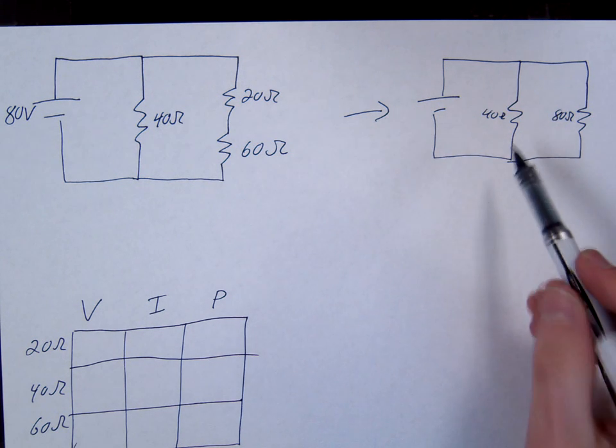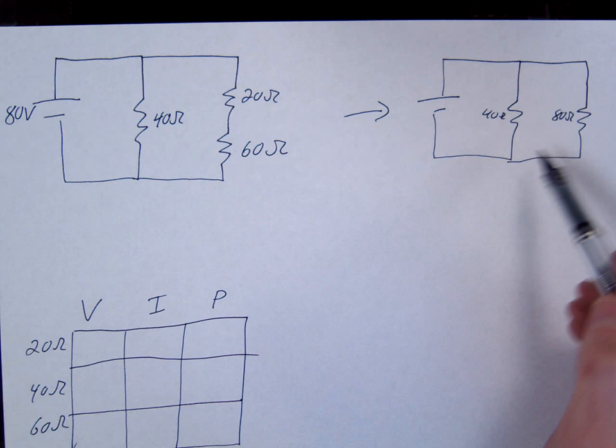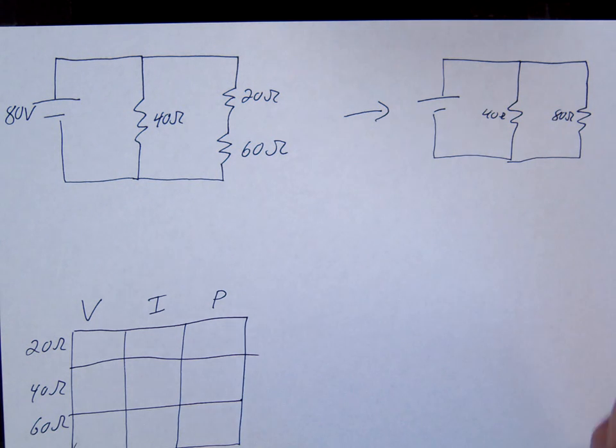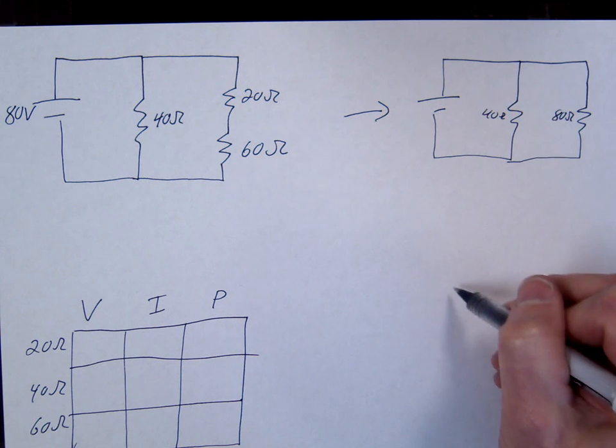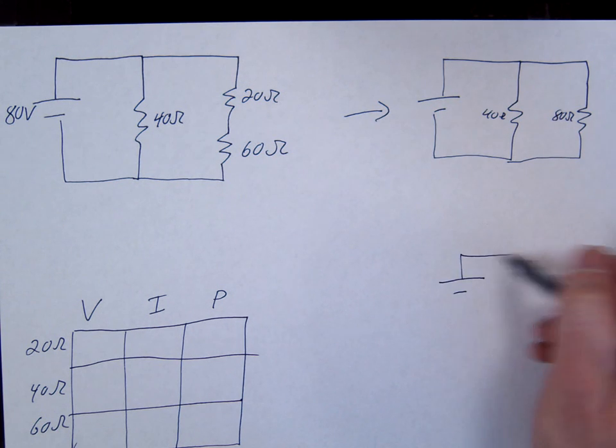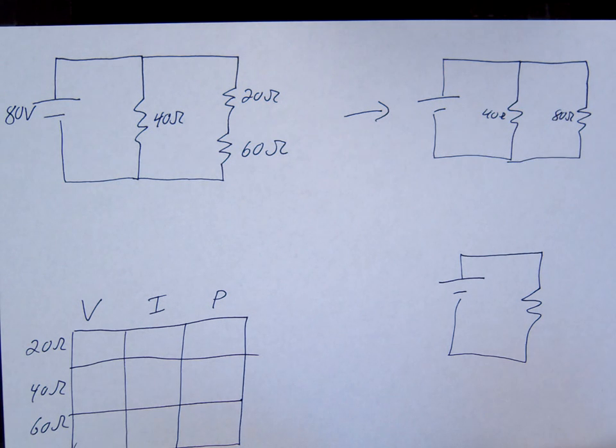So then you look at this and you notice, how are these combined? In parallel. So you're going to do the 1 over function. 1 over 40 plus 1 over 80 equals 1 over the answer. And when you do that, you get one single circuit with how much resistance? 26.7, 6 repeating probably.